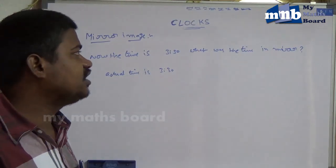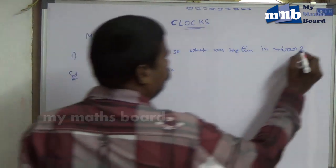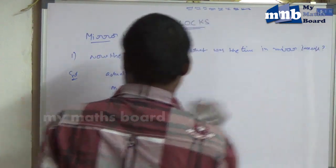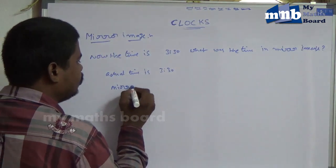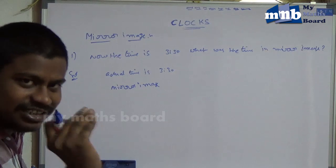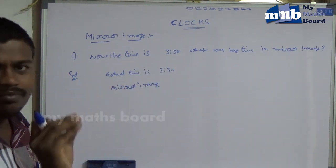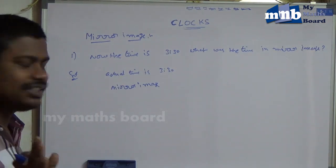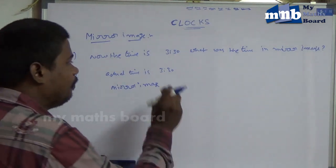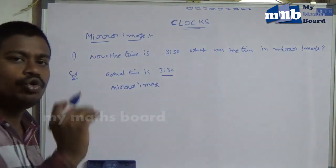Type 5 is mirror image. To calculate the mirror image, simply subtract the given actual time from 12 hours. You will get the answer easily. Simply, if you want the mirror image, subtract the given actual time from 12 hours.